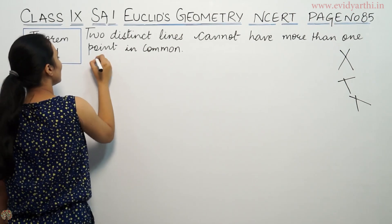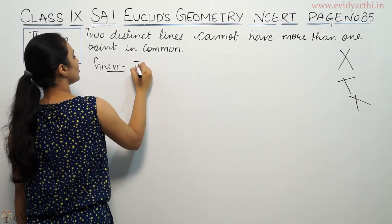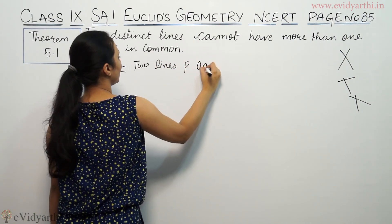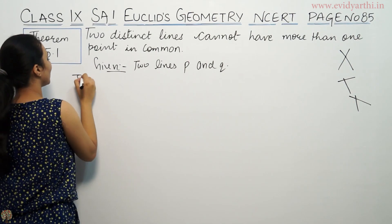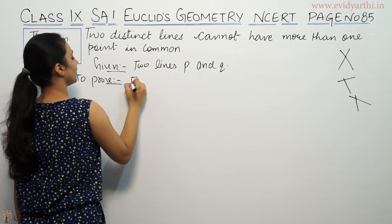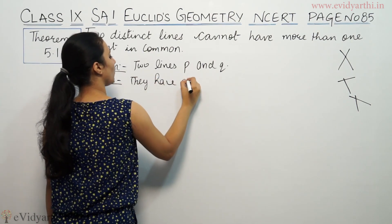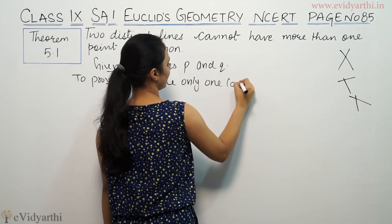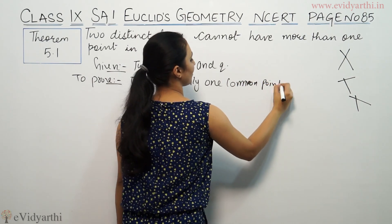So you are given two lines, supposedly P and Q, and you have to prove that they have only one common point. The number of common points is one here.